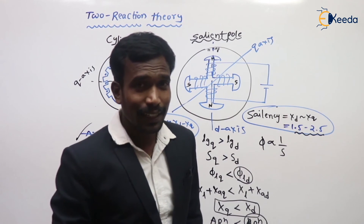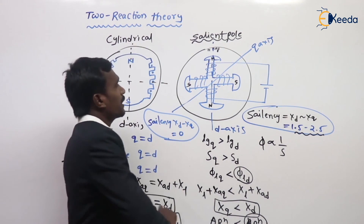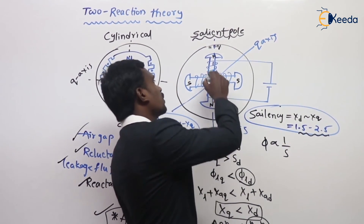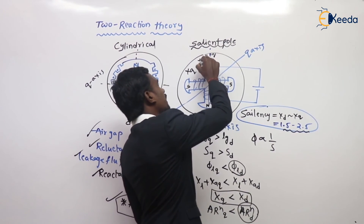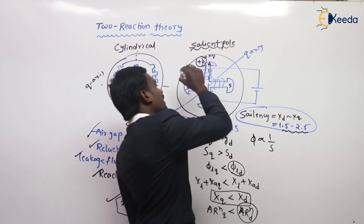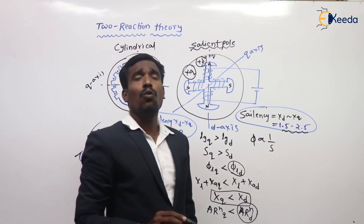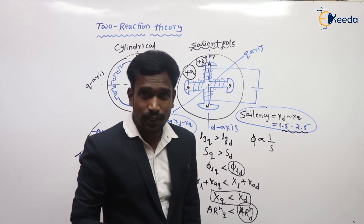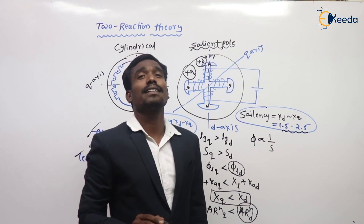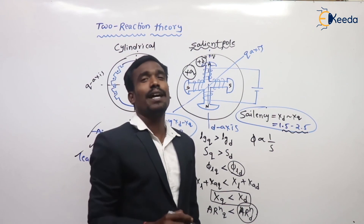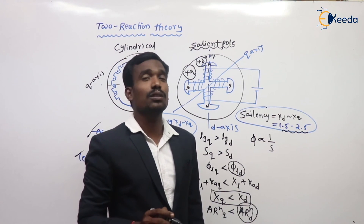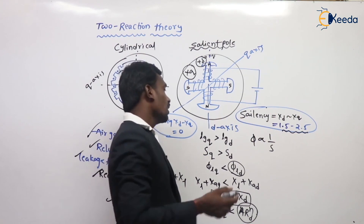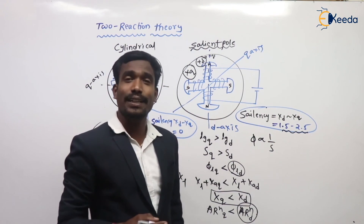This is about two-reaction theory. We have to find the XQ and XD values by conducting a test. The test we conduct to find XQ and XD is the slip test. By conducting the slip test, we can find the XQ and XD values of our synchronous machine. Let's conduct a slip test on the salient pole machine to find these XQ and XD values.